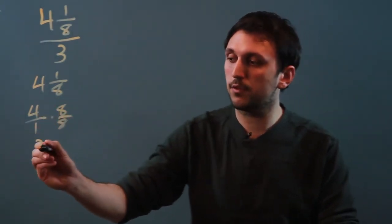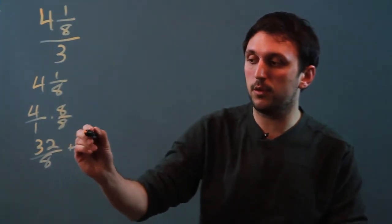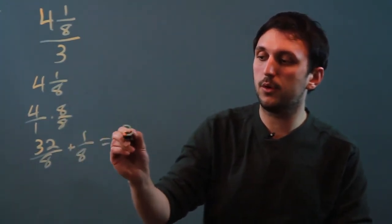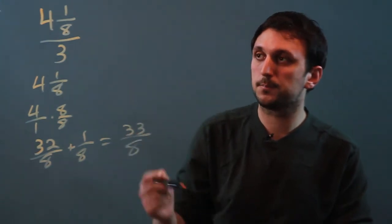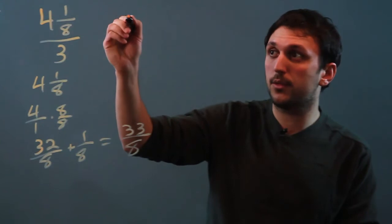And that gives us 32 over 8. And then we have this 1/8 hanging out, so we say plus 1/8, and that equals 33 over 8. So now we have 33 over 8, and we want to divide it by 3.